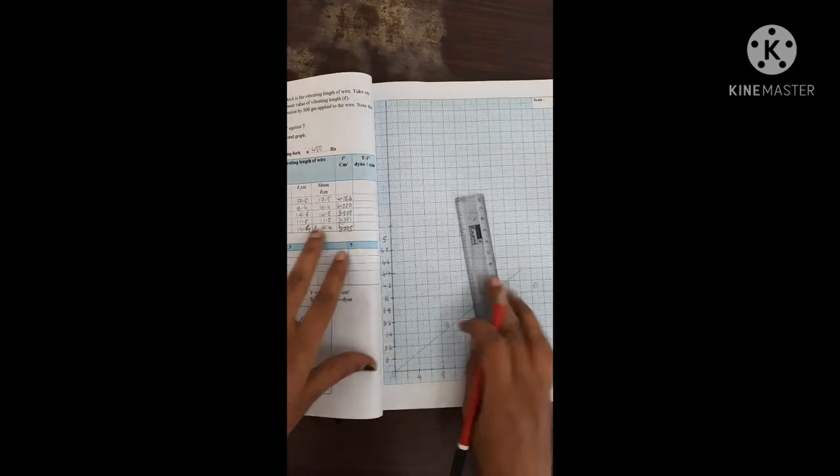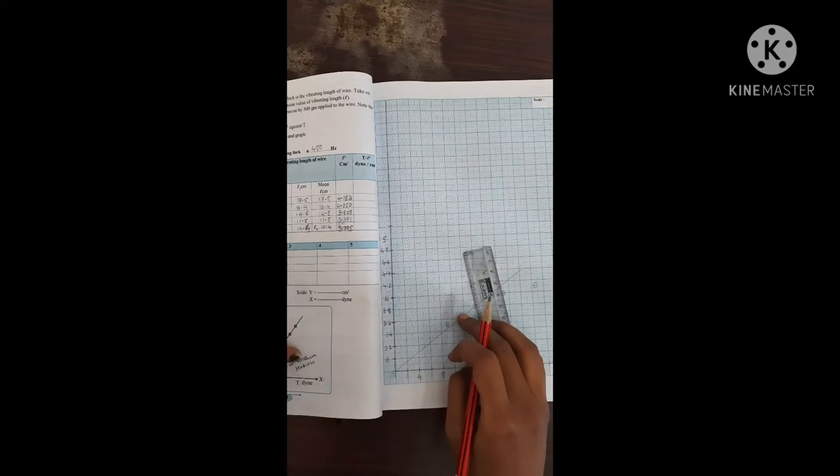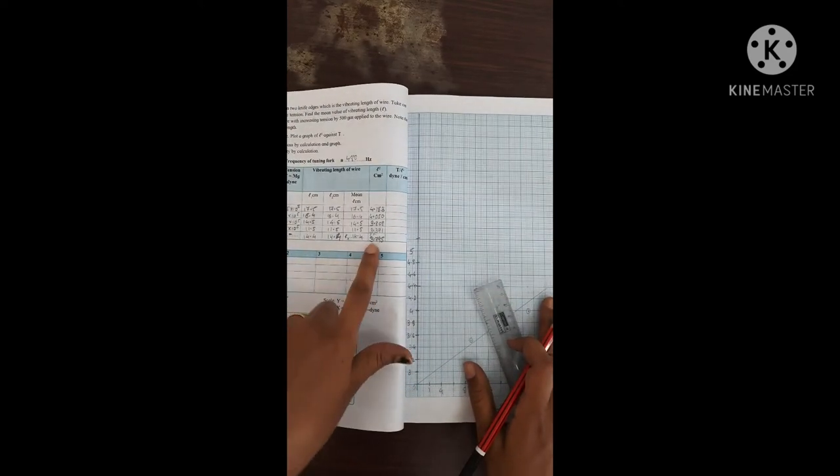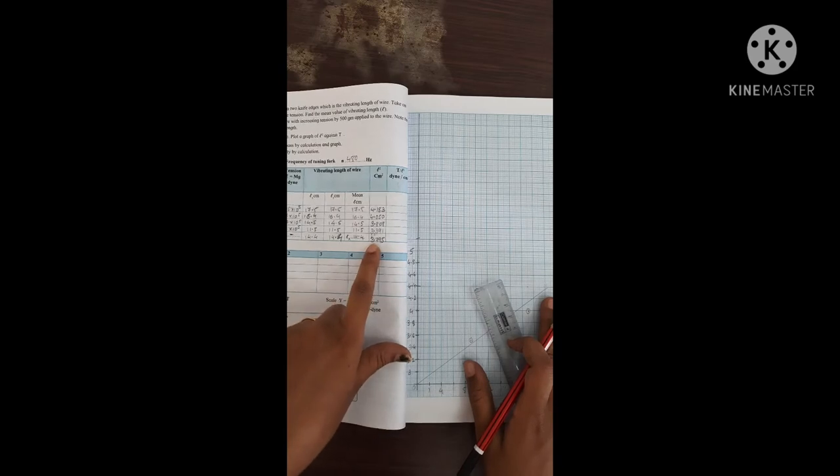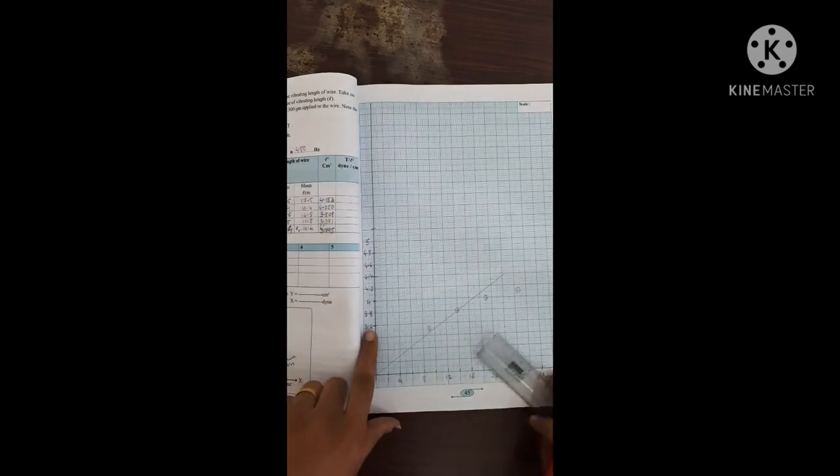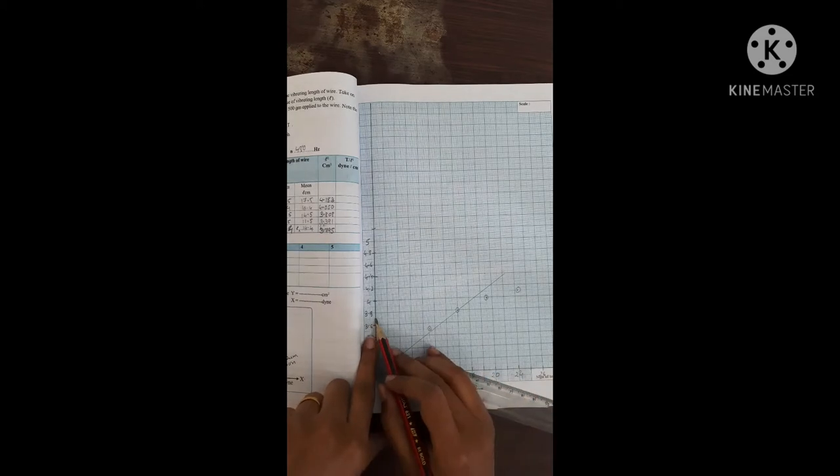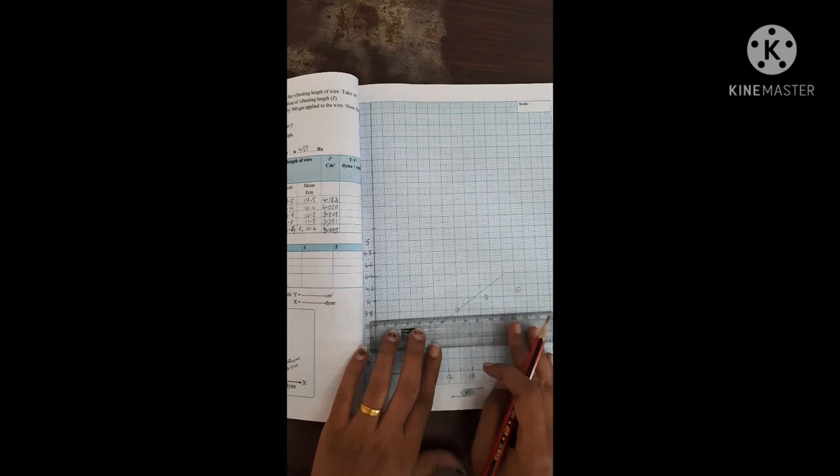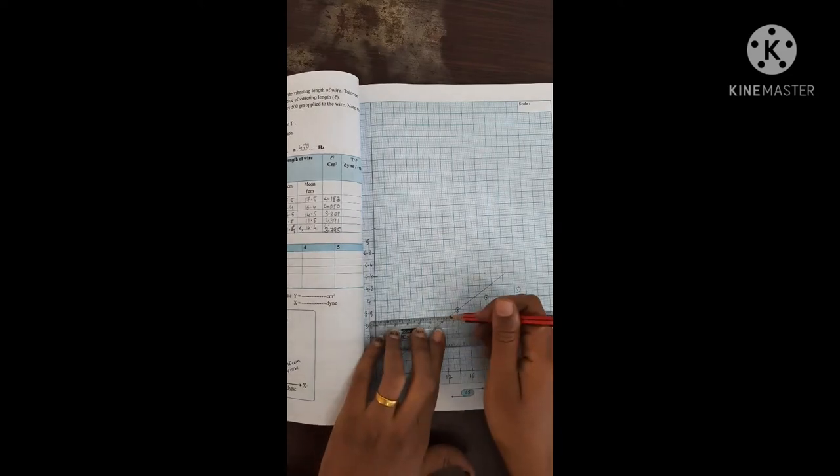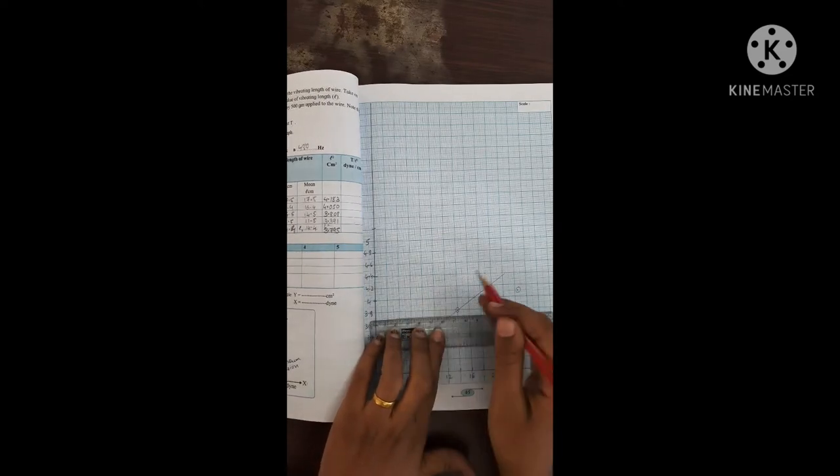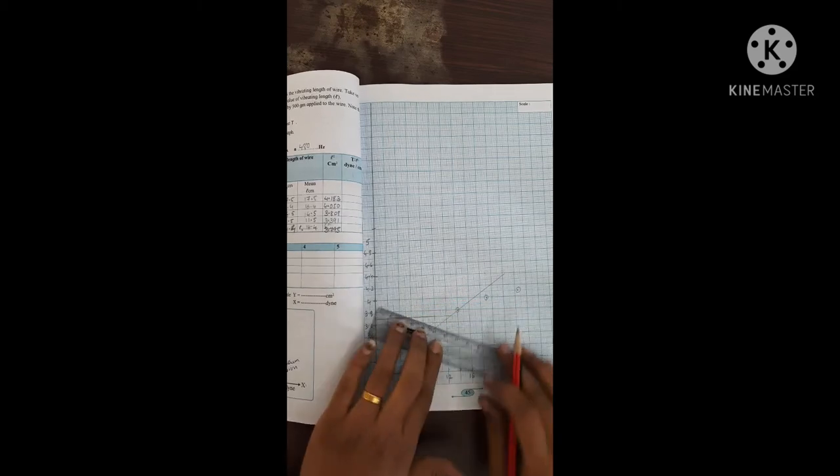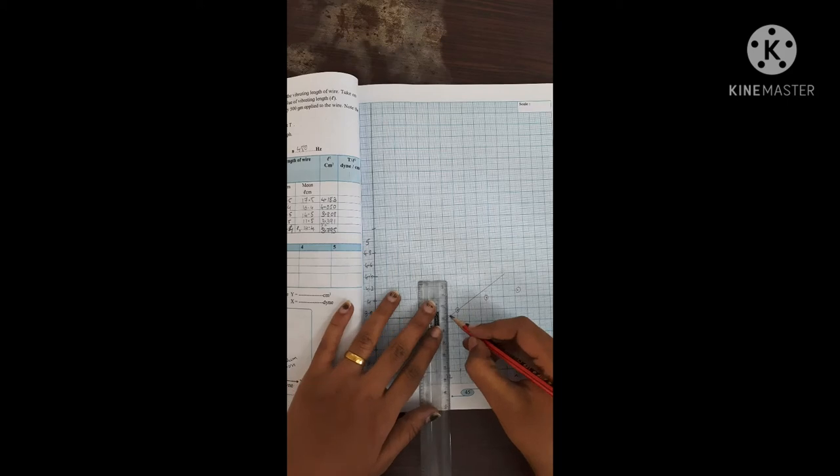What do you have to do? In the last video also what we have done, we have drawn a perpendicular line. So l square of unknown, this mass is how much? It is about 3.7. So where is 3.7? It is about here. So 3.7 I will take and then I have to draw a perpendicular line towards this.